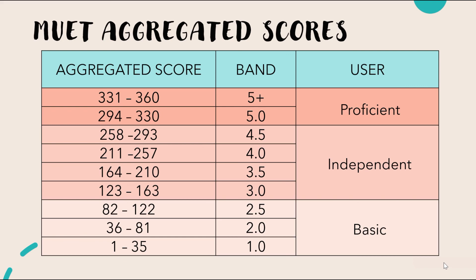Finally, the Proficient User category. You need a total mark of 294 to 330 to get Band 5.0, and a score of 330 to 360 marks to achieve Band 5+, which is the highest band and something to be really proud of. Both Band 5.0 and Band 5+ place you in the category of a Proficient User. This video ends here — I will see you soon in the next video.